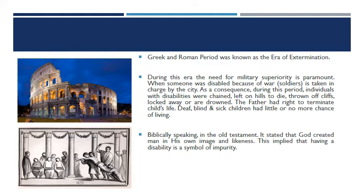Biblically speaking, in the Old Testament, it is stated that God created man in His own image and likeness. Philosopher Cicero called for the purity of the race — a society free of defectives — implying that having a disability is a symbol of impurity. Whether your disability was caused by war or biologically inherited, you were considered an impure individual.